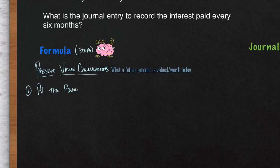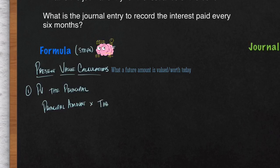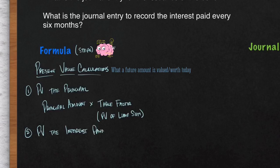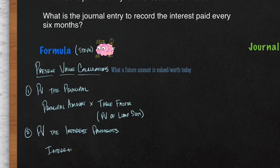The first step is to present value the principal — the amount you borrowed — by taking the principal amount times a table factor. The principal will always be what's stated on the bond contract, in this case one million dollars, and the table factor used is the present value of a lump sum. The second step is to present value the interest payments — what you pay bondholders periodically. You take the interest payments and multiply by a table factor, but here you use the present value of an annuity table.